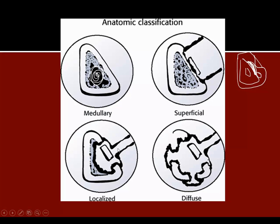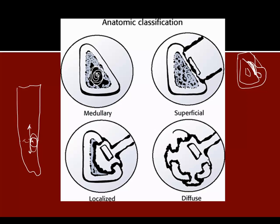A localized infection is when you have one regional area — say your tibia with the area of infection localized, there's a sinus tract, and the infection gets into the medullary canal. If you want to aggressively treat this, you may need to go in, debride, maybe make an oval window, ream out the canal, debride bone. An extreme example would be to resect the area, put a spacer in, and do an Ilizarov technique — making an osteotomy or corticotomy and transporting bone down to fill the defect.